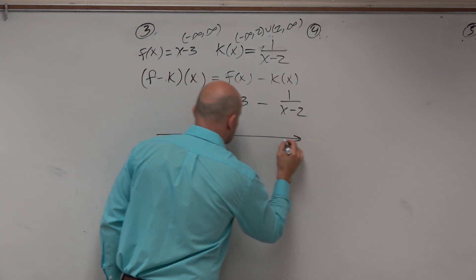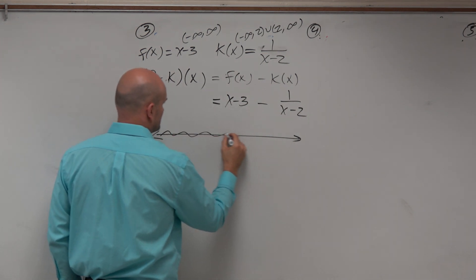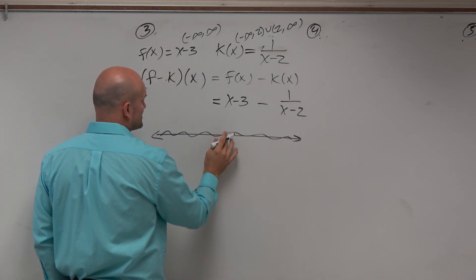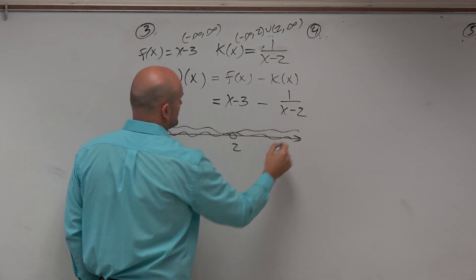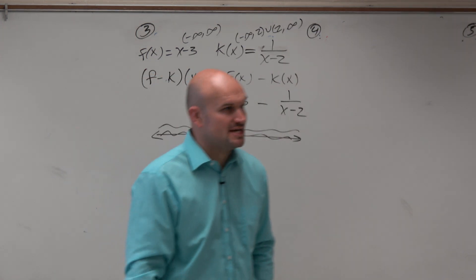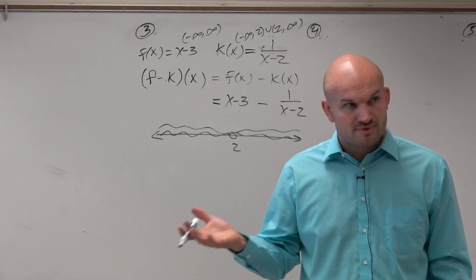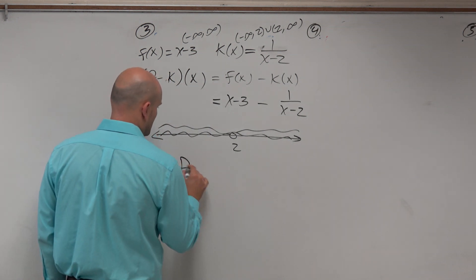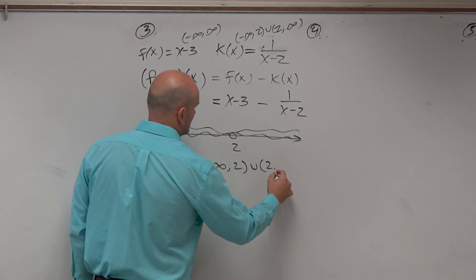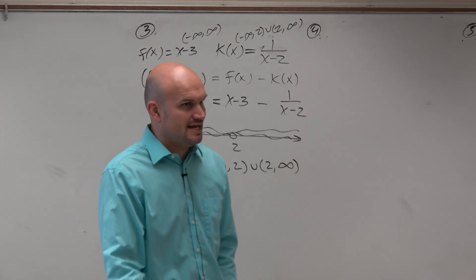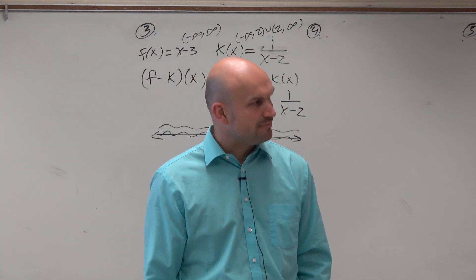So if I want to look at this domain here, I have all real numbers, and then I have a function that has all real numbers except for 2. So where do those two domains intersect? You're looking for the intersection. When are they both true? All real numbers except for 2. You don't need to simplify it to get the answer there. You can apply the operation and find the domain without simplifying it.